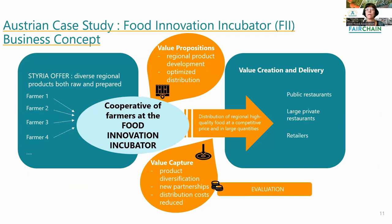Here is one example of a business model developed in the Fairchain project. This is the Austrian case study, where several fruit and vegetable farmers in the Styria region came together via a social innovation — the Food Innovation Incubator, a place where small producers are supported. There they formed a goal, or in business model language, a value proposition: to develop regional products from their farms and to distribute them together in order to provide sufficient quantities for larger institutions in an optimal way. The value creation and delivery identified the customers as public and private restaurants and retailers — groups that none of the producers could reach alone because they don't produce enough. Importantly, individual consumers are not among the target group.